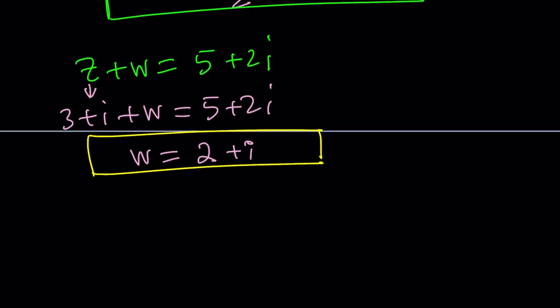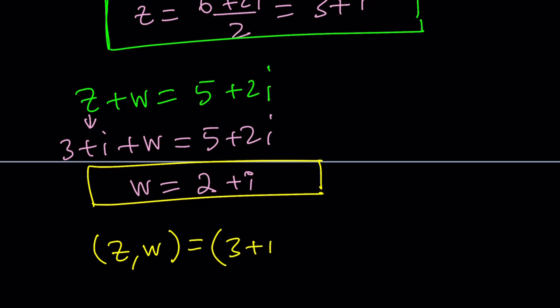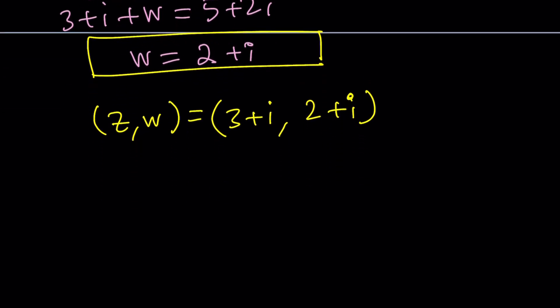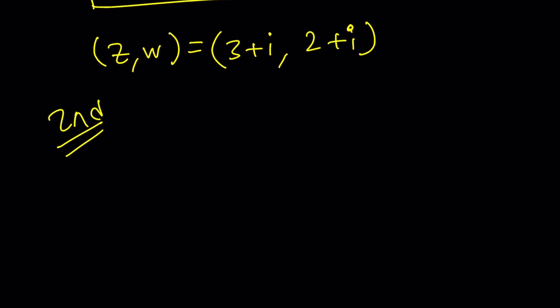So if you wanted to write it as a z comma w ordered pair which is kind of weird because it's an ordered pair of ordered pairs, but that would be 3 plus i comma 2 plus i. Anyways these are objects so we can always write an ordered pair. So this is basically the first method. So the first method is substitution. Let's go and rewrite our system and take a look at the second method.